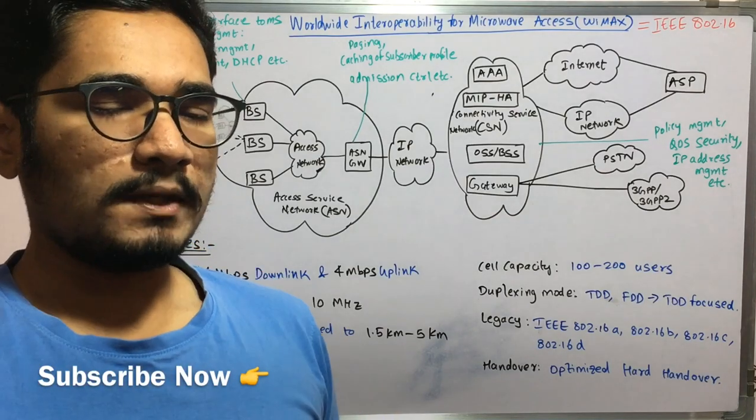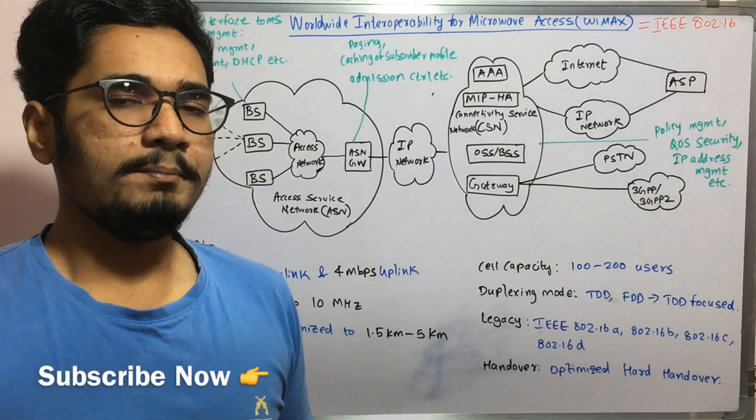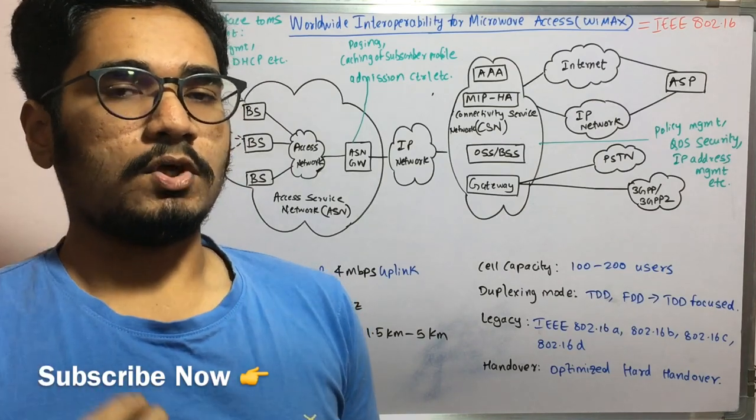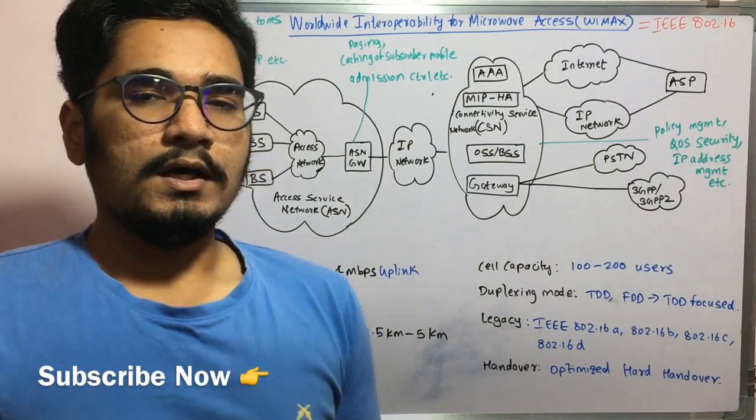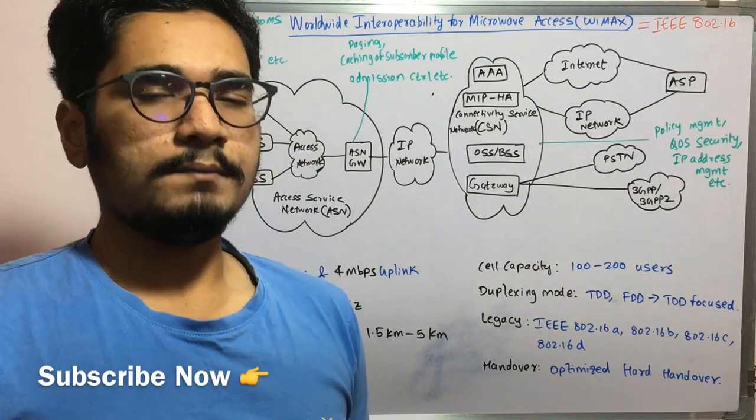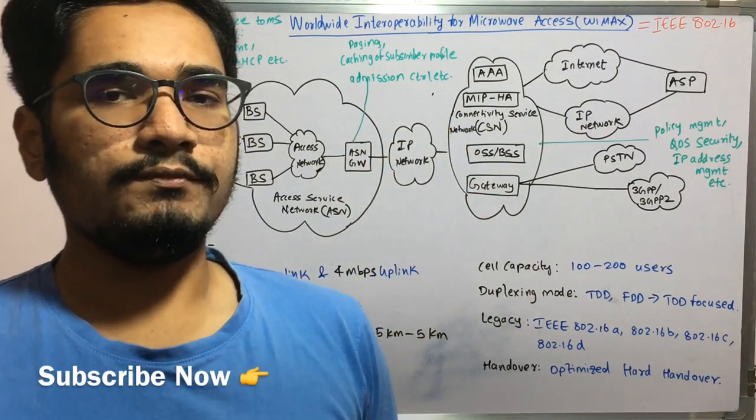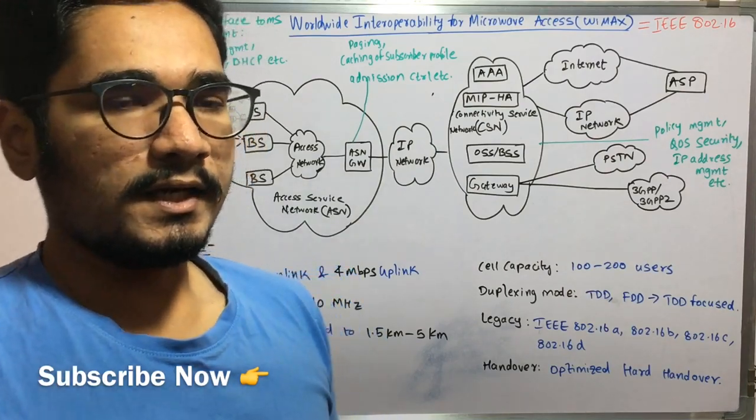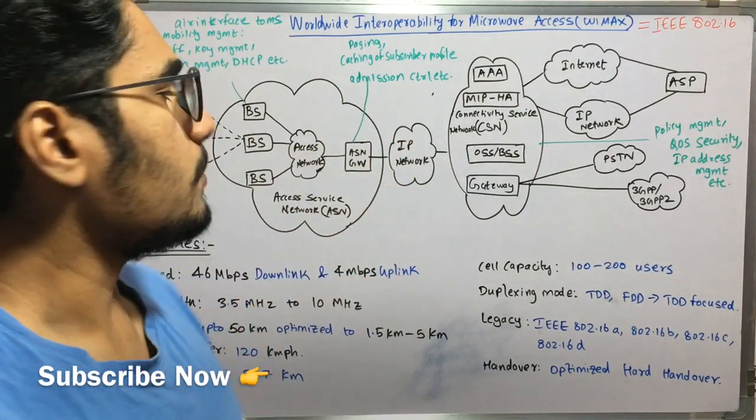So basically, there are n number of subscriber profiles or subscribers who might be registered to the WiMAX system. So whenever if any new access or if any new request from an already existing subscriber comes, then it will just update it from its cache. Else, it's a new customer, then it will be dynamically creating that particular subscriber profile.